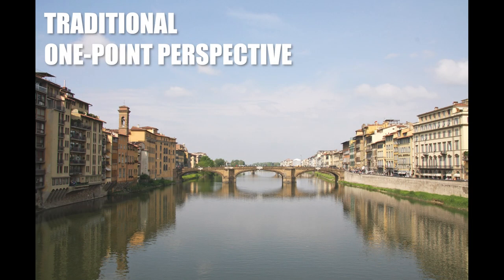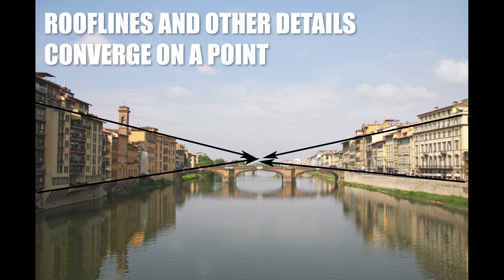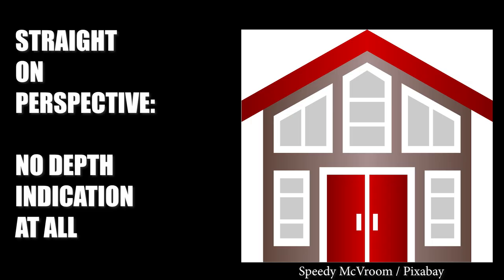Here are a few examples of what we're talking about with one-point perspective and the house. You might be thinking of traditional one-point perspective, where you have a long scene viewed down either a river, a road, or maybe railroad lines. When you're looking down that long scene, you can clearly see where all the roof lines, windows, and other things converge on a single point in the distance. That is traditional one-point perspective.